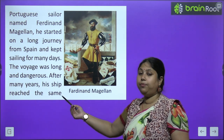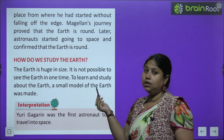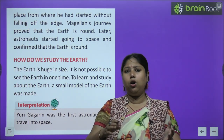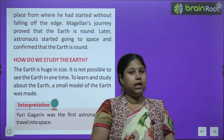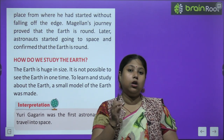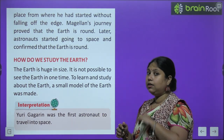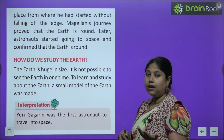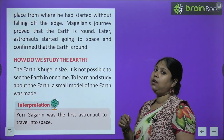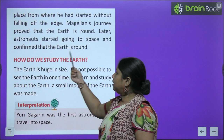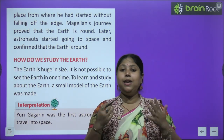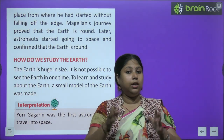After many years, his ship reached the same place from where he had started without falling off the edge — yaani kai saalon tak Magellan ek jagah se doosri jagah jaate rahe. Finally, bahut saalon ke baad, unka jo ship tha, woh vaapas usi jagah pe aa gaya jahan se unhone apni journey start ki thi. Aur jab woh apni jagah pe vaapas aakar pahunche, tab unhone conclude kiya — ki iska matlab earth jo hai flat nahi hai. Hum kitni bhi lambi journey kar lein, hume girne ka koi darr nahi hai. Iska matlab earth kya hai? Gol hai — kyunki hum jahaan se shuru karte hain yatra, wahi pe vaapas aakar ruk jaate hain. Later, astronauts started going to space and confirmed that earth is round — tab unhone ye confirm kiya ki Magellan ki theory bilkul sahi thi. Earth sach mein hi round in shape hai.